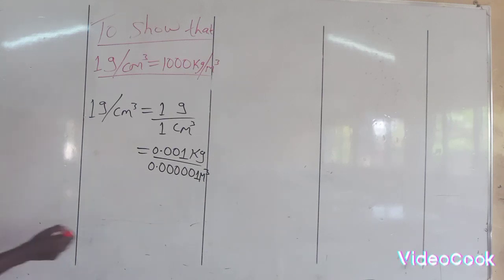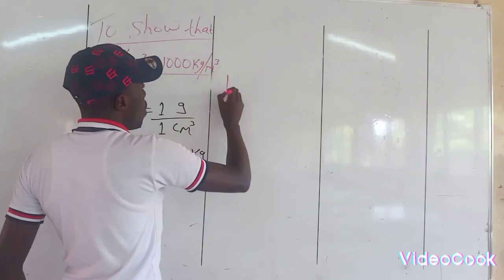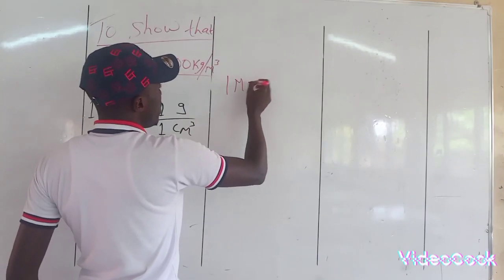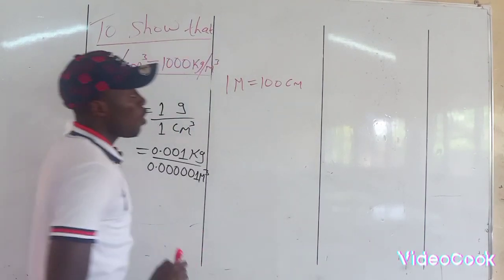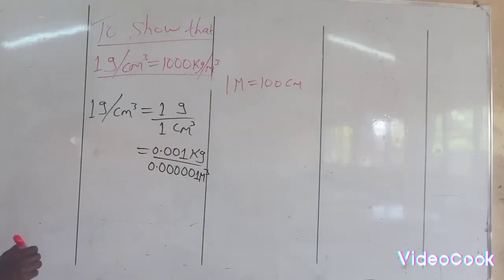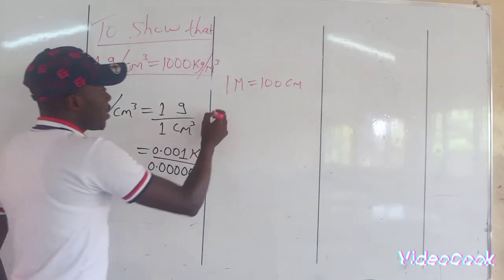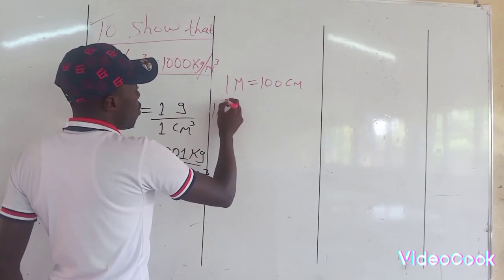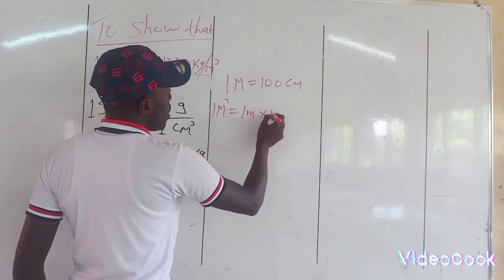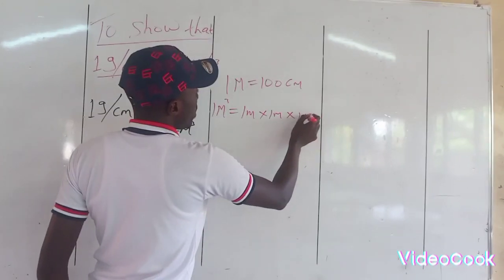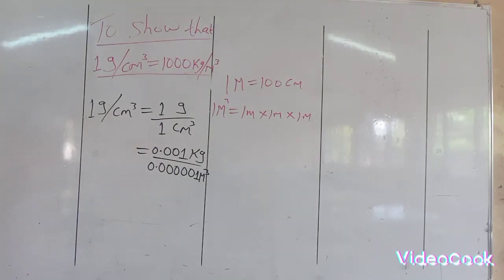It's important to note: 1 meter is equal to 100 centimeter. 1 meter cubed, 1 cubic meter, means 1 meter times 1 meter times 1 meter, because a number cubed simply means a number times itself two times.